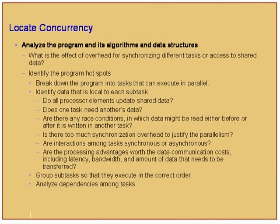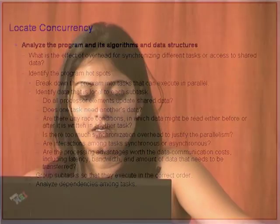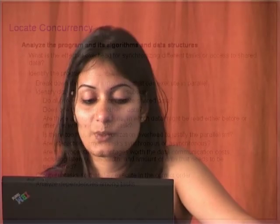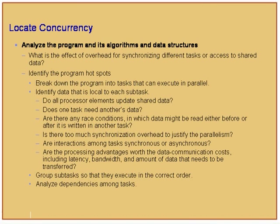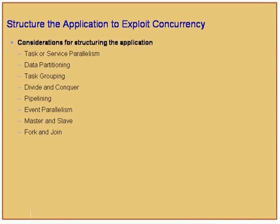Check whether processor elements share and update shared data, whether tasks depend on each other's data, whether race conditions exist, whether there is too much synchronization overhead, and whether interactions are synchronous or asynchronous. Then structure the application to exploit concurrency — options include task or service level parallelism, data partitioning, task grouping, divide and conquer, master-slave, and fork-and-join configurations.